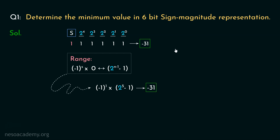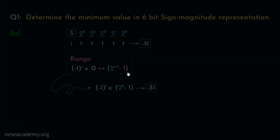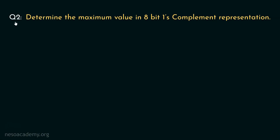Those are the two ways to find any value represented in sign-magnitude form. The second formula-based approach is preferable if we understand the conceptual derivation from the previous session. Let's now move on to the next question.